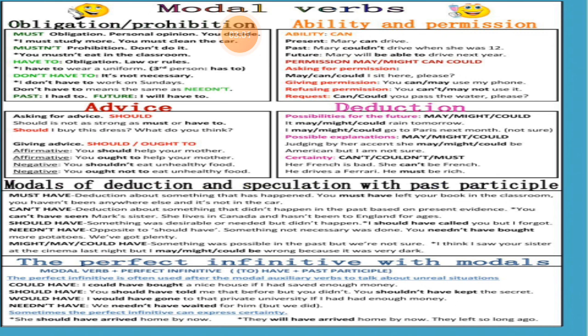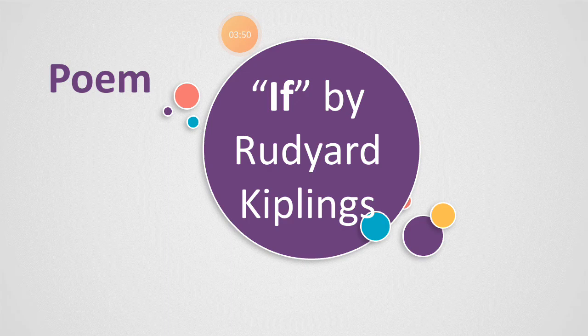Possibilities for the future: 'may,' 'might,' 'could.' Then possibility: 'may,' 'might,' 'could.' Certainty: 'cannot,' 'couldn't,' 'must.' Modals of deduction and speculation with past participle: 'must have,' 'cannot have,' 'shouldn't have,' 'should have,' 'need not have,' 'may have,' 'might have.' Then the perfect infinitive with modals: 'could have,' 'should have,' 'would have,' 'need not have,' 'couldn't have,' 'could have,' 'should have.' So all these are the modal verbs for deduction and speculation and perfect infinitive with modals.